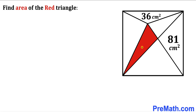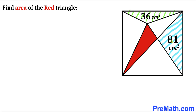In this video we have a bunch of triangles fully confined in a square, such that the area of one triangle is 36 centimeters square, whereas the area of the right-hand side triangle is 81 centimeters square. Our task is to calculate the area of the red shaded triangle.